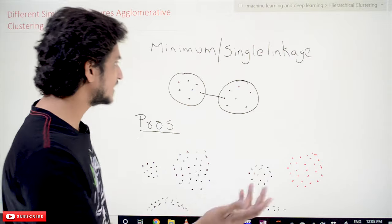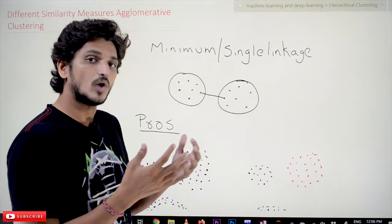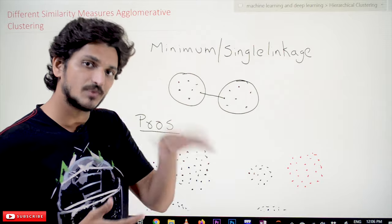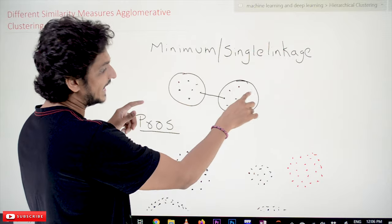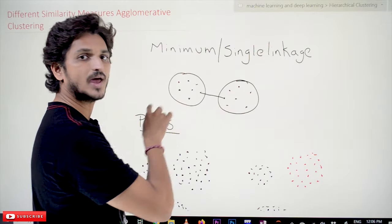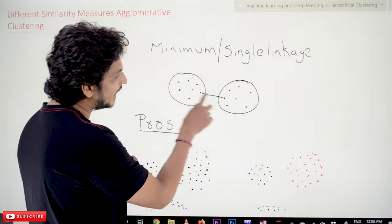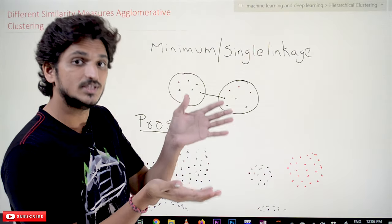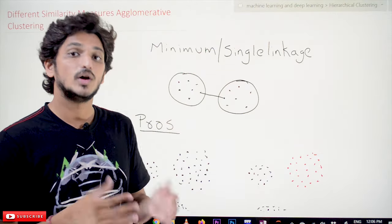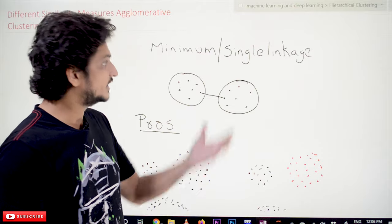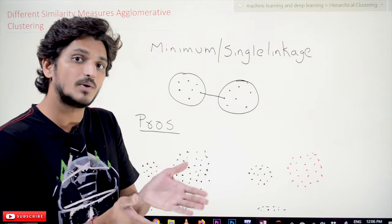Let's take an example for refreshing the concept. Let's take these two clusters. If you want to identify the similarity between these two clusters using the maximum method, the two points that are very far away are identified and the maximum distance is updated in our distance matrix. We call this complete linkage. Identifying the minimum distance and updating the distance matrix is called single linkage. Different clusters will be formed based on these different similarity measures — different clusters for minimum, different clusters for maximum.